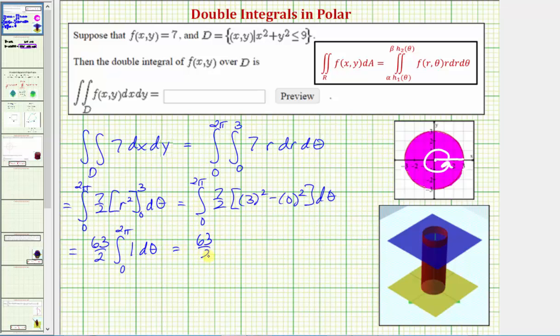So we'd have 63 halves times the anti-derivative of one with respect to theta, which would just be theta. So we'd have 63 halves times the quantity, we'd have two pi minus zero, or 63 halves times two pi, or two pi over one, which simplifies to just 63 pi. And this decimal approximation would be approximately 197.9203.